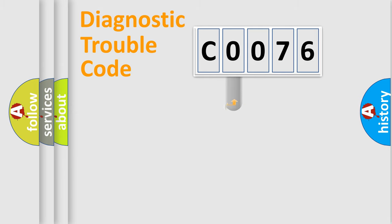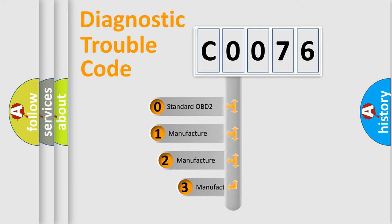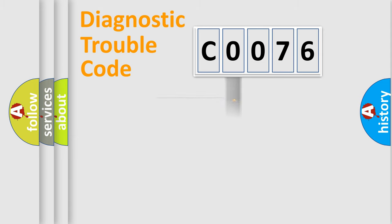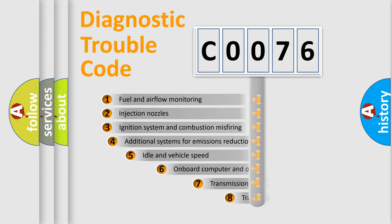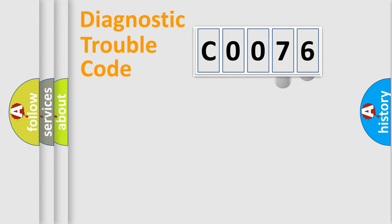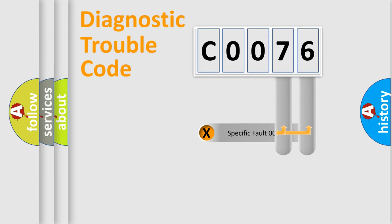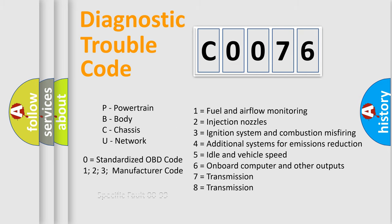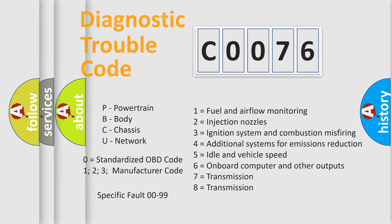This distribution is defined in the first character of the code. If the second character is expressed as zero, it is a standardized error. In the case of numbers 1, 2, or 3, it is a more specific expression of a car-specific error. The third character specifies a subset of errors. The distribution shown is valid only for the standardized DTC code. Only the last two characters define the specific fault of the group. Such a division is valid only if the second character code is expressed by the number zero.